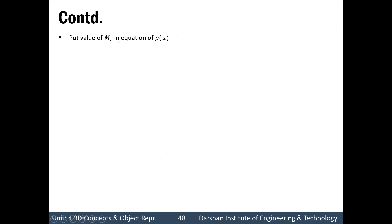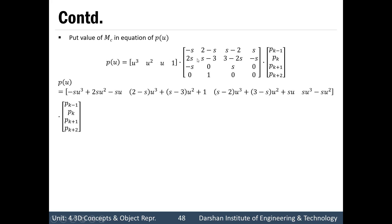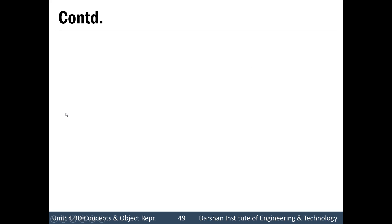Now, put the value of matrix for cardinal spline in equation of p(u). Then we are going to multiply this matrix with this one and it will give this output. And again multiply this matrix with this matrix and we will get equation which is like this, in which we are separating this control point and all rest terms we are going to put in a bracket.